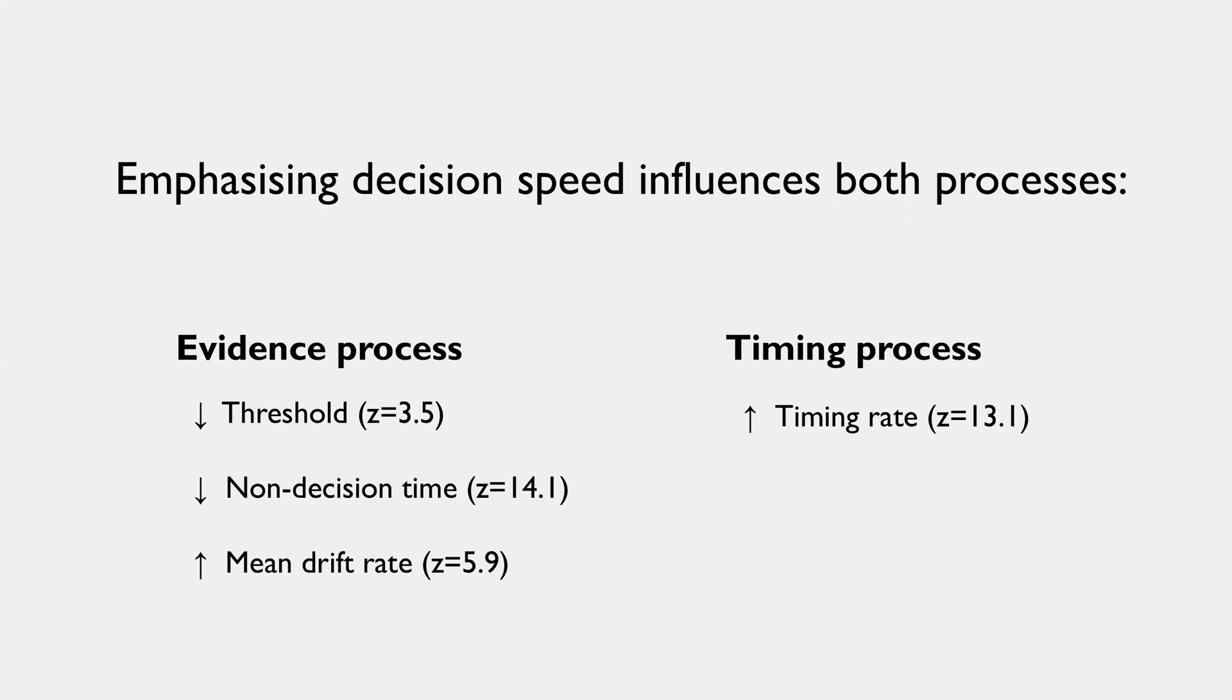In fact, the strongest effect sizes we found in these data sets, I'm showing Z scores here for the perceptual decisions, was actually in the timing rate and the non-decision time. And the traditional explanation of the changes in threshold was actually the smallest effect size.